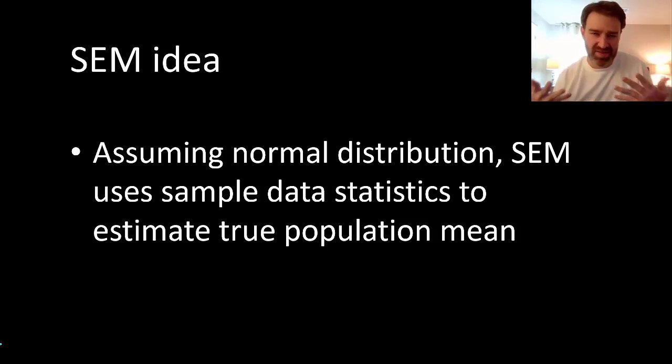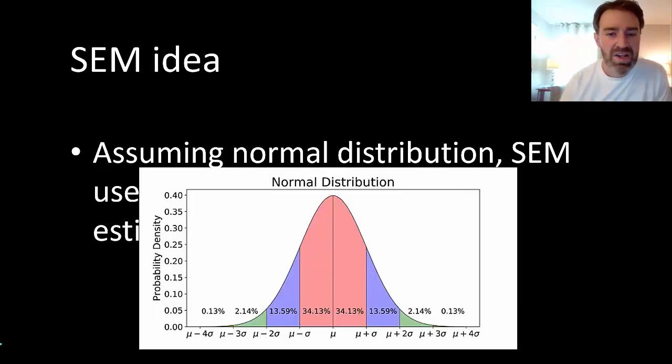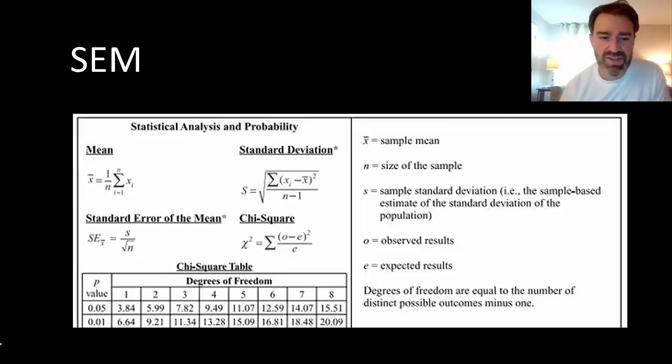It's kind of a theoretical concept, but basically it's thinking about if we could measure all of the possible plants out there of this species, that would be like the true population mean. That might help us think about more universally than just the sample data set what might be going on here. In order to measure that, we're going to need two variables for standard error of the mean: the sample's standard deviation and the sample size.